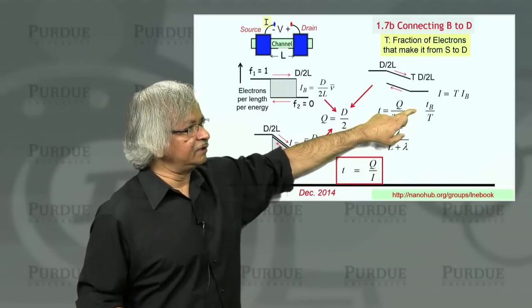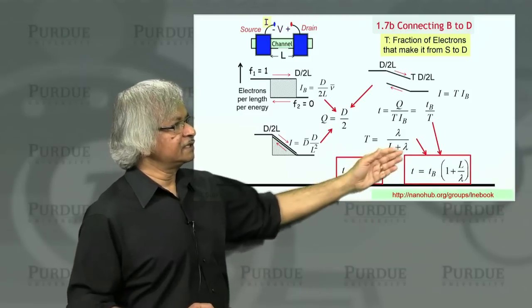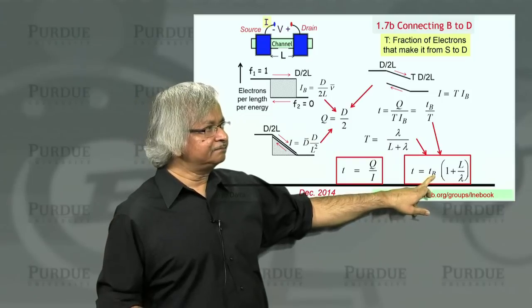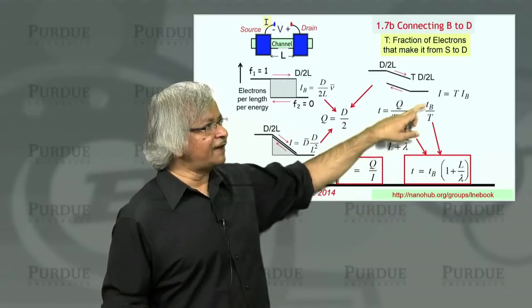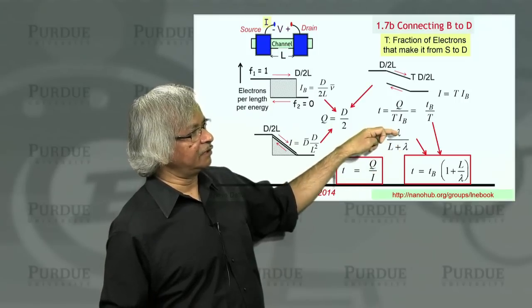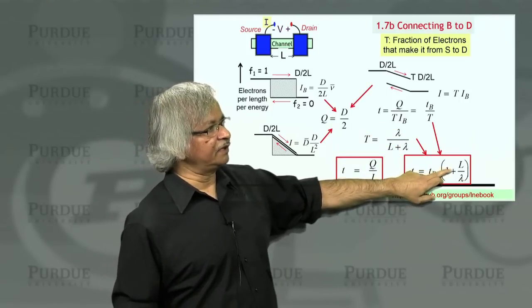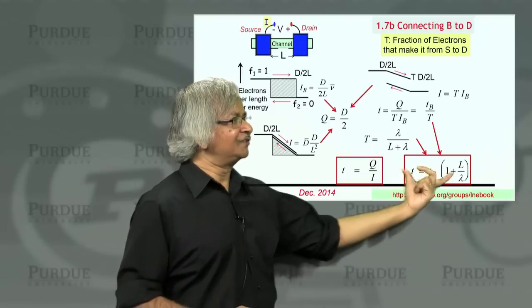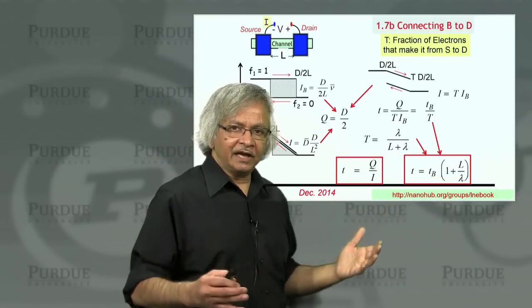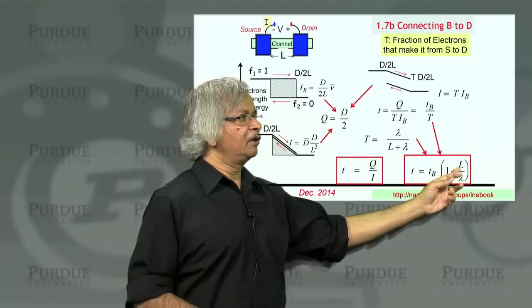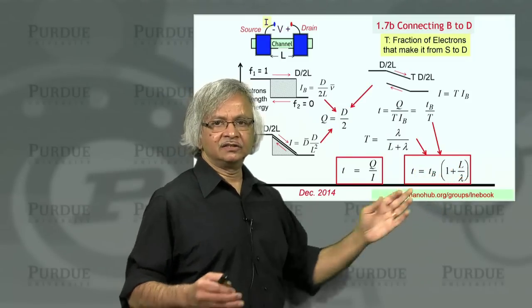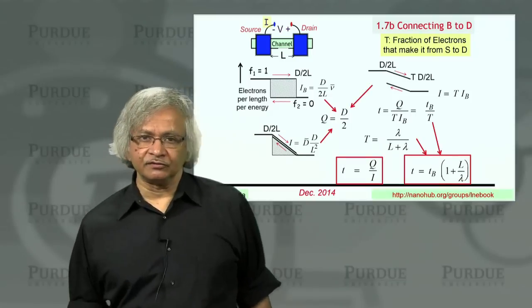If you combine that with this, what you get is that the time is equal to the ballistic time divided by T. The divided by T means L plus lambda over lambda, which can be written as 1 plus L over lambda. This is the expression that I had mentioned earlier, that the time in the general case can be written in this form. When L is small, it's the ballistic time. When L is large, this is what will become the diffusive time.